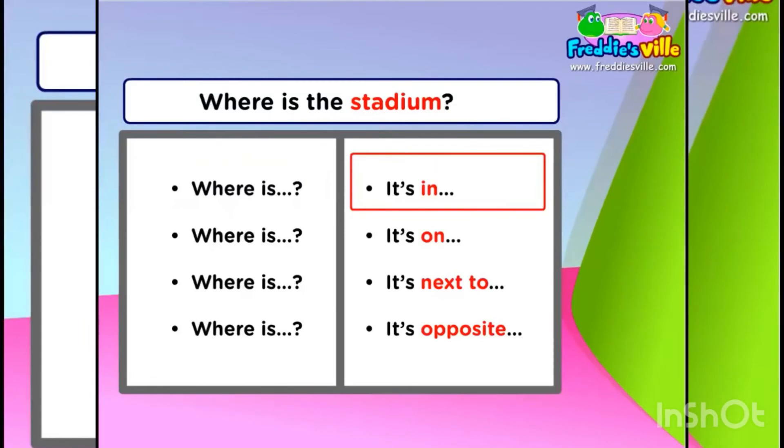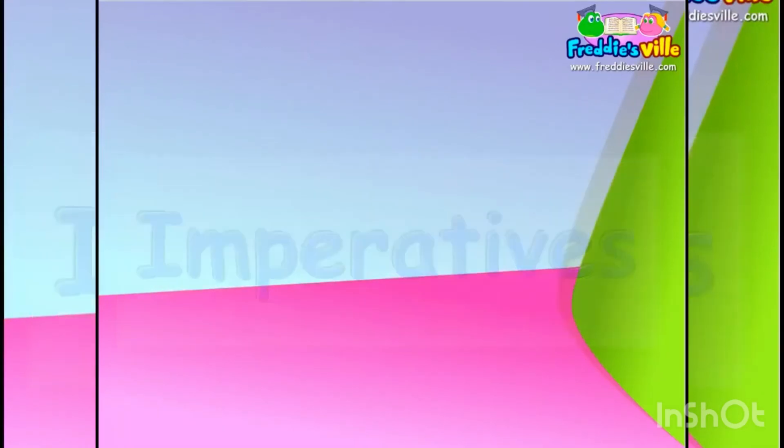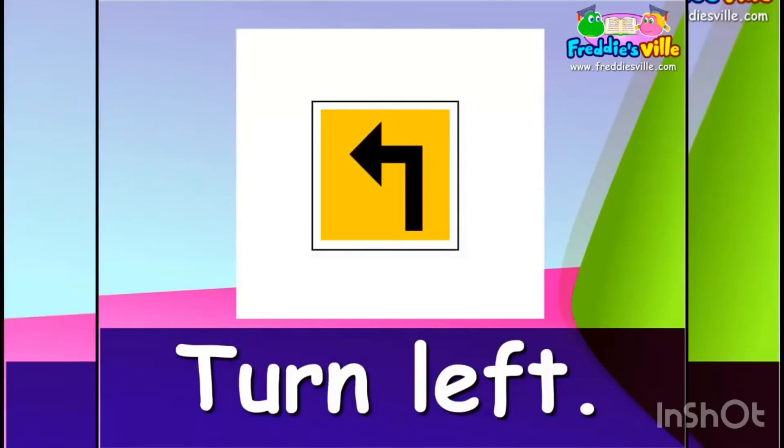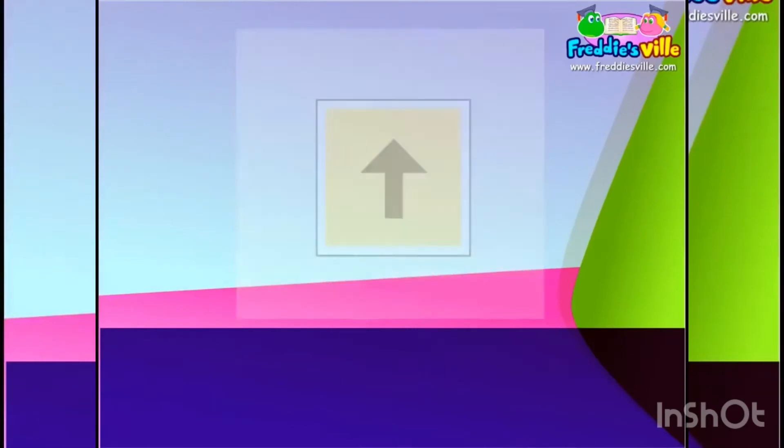Prepositions of place. Where is? It's in. Where is? It's on. Where is? It's next to. Where is? It's opposite.